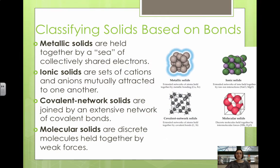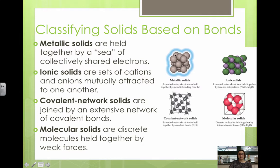Classifying solids based on bonds, we have four different types. The first are metallic solids. Metallic solids have a sea of electrons, which is what allows conductivity, and metallic solids are strong without being brittle. They have these collectively shared electrons within the crystal structure.